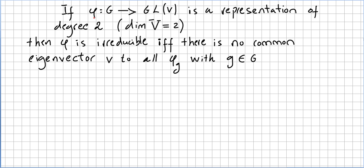If phi is a representation from the group G to the general linear group, so if it is a representation of degree 2, then phi is irreducible if and only if there is no common eigenvector V to all phi G with G in the group.